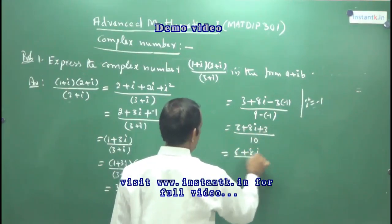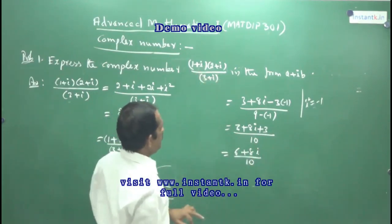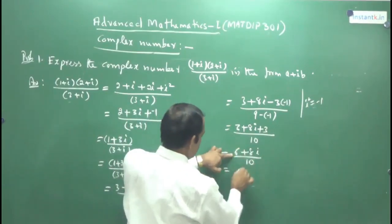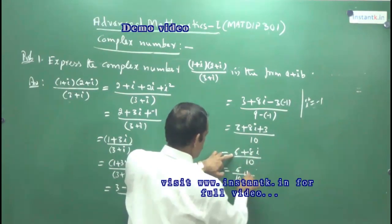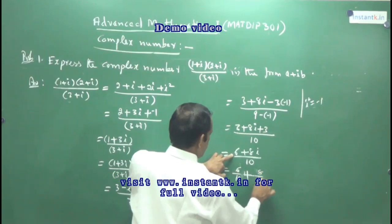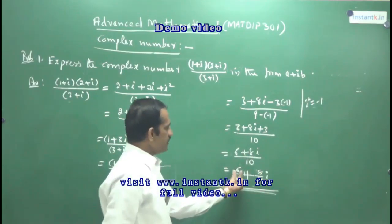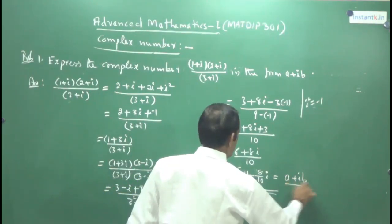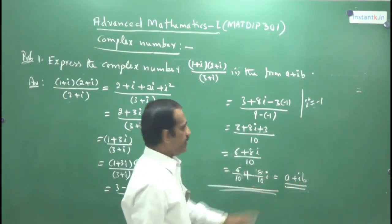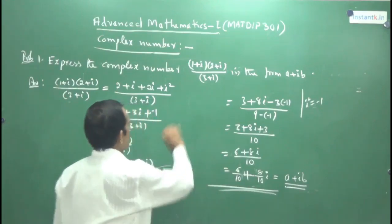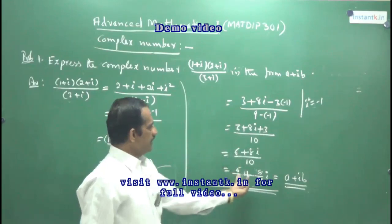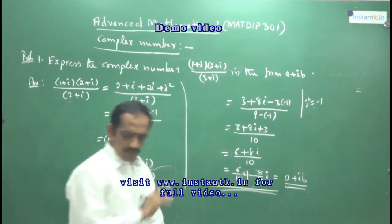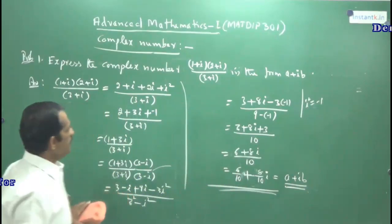To write the answer in the form a plus ib, note that 10 is common for both terms. So you write 6 by 10 plus 8 by 10 times i. This complex number is now in the standard form a plus ib, where a equals 6 by 10 and b equals 8 by 10. That is the answer. So one question will always be asked: write the complex number in the form a plus ib.